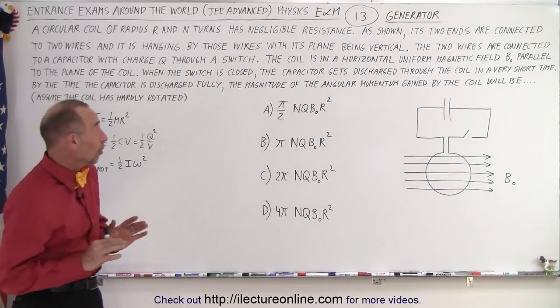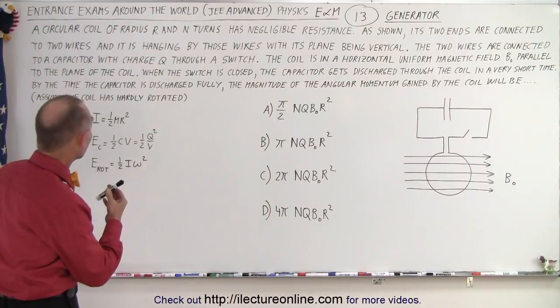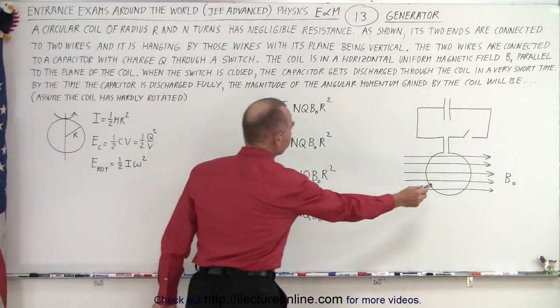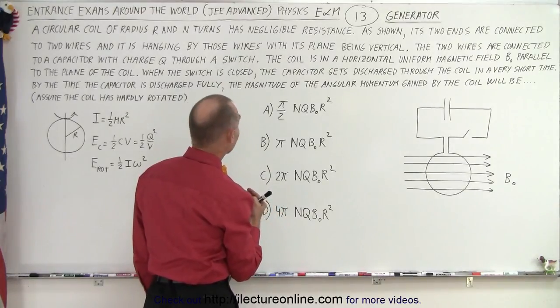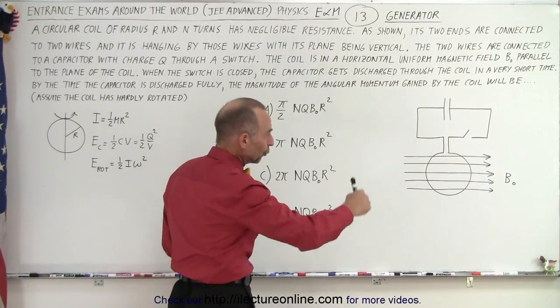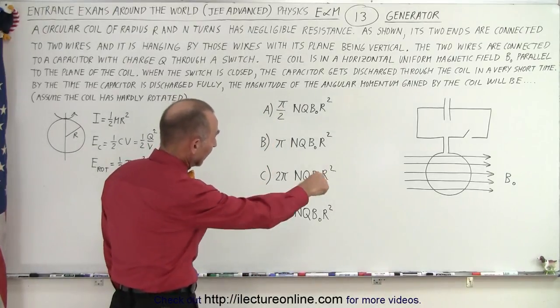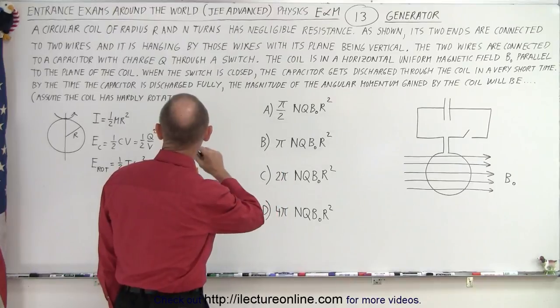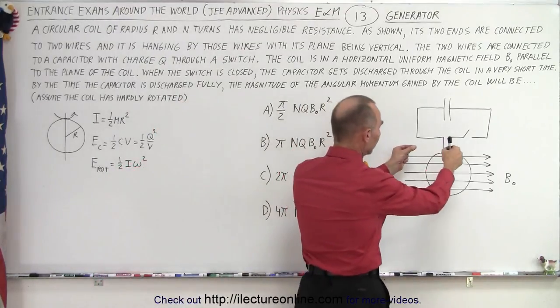At first I didn't think so, because when I read the problem it says the following: A circular coil of radius R has negligible resistance, and it's made up of N turns, a whole number of turns. As shown in the figure, its two ends are connected to two wires, and it is hanging by those wires. You can see that it's hanging by the wires.